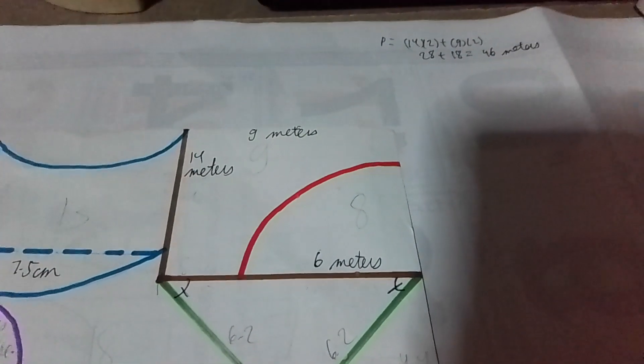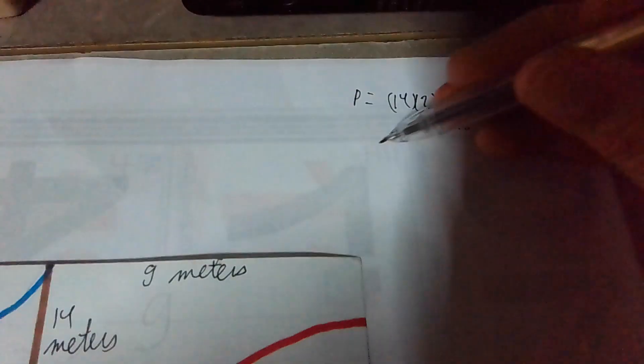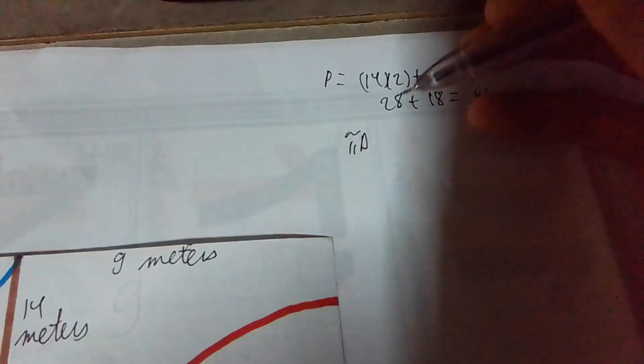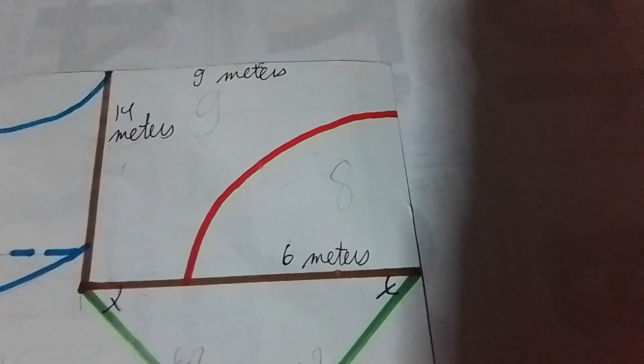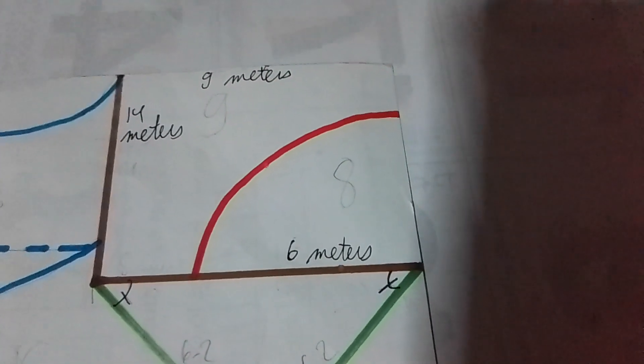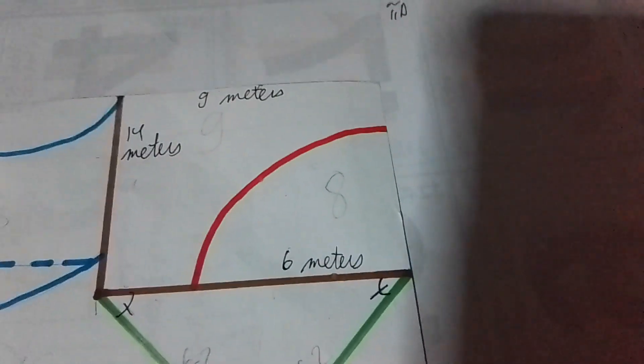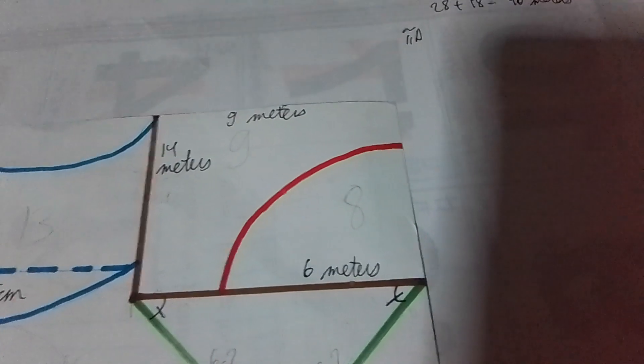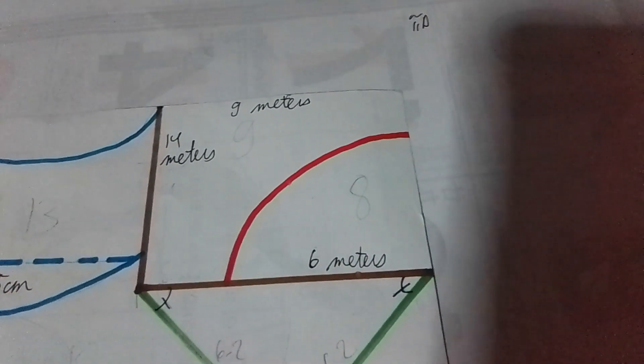You know already how to solve for the perimeter of a circle, right? It's always pi times D. But look at the circle. Do you notice it just shows one-fourth of it? Therefore, one-fourth of a circle is just pi times the diameter, divide by 4.